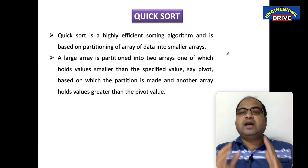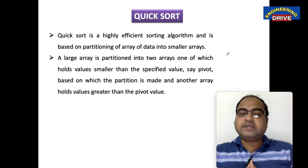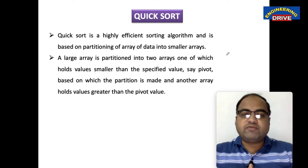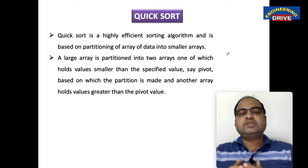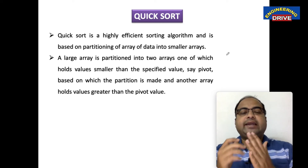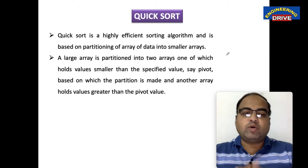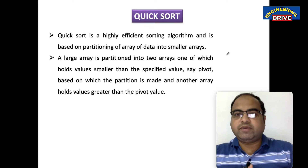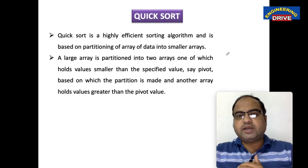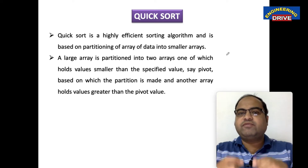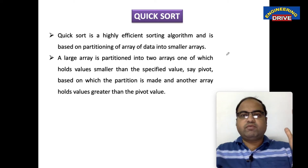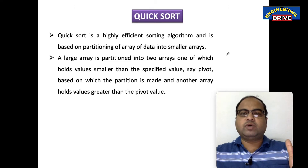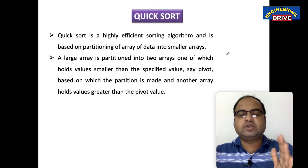A large array is partitioned into two arrays. One of which holds values smaller than the specified value — say pivot — based on which the partition is made, and another array holds values greater than the pivot value. Remember this important point, dear students. This is the unique feature of this quicksort algorithm.